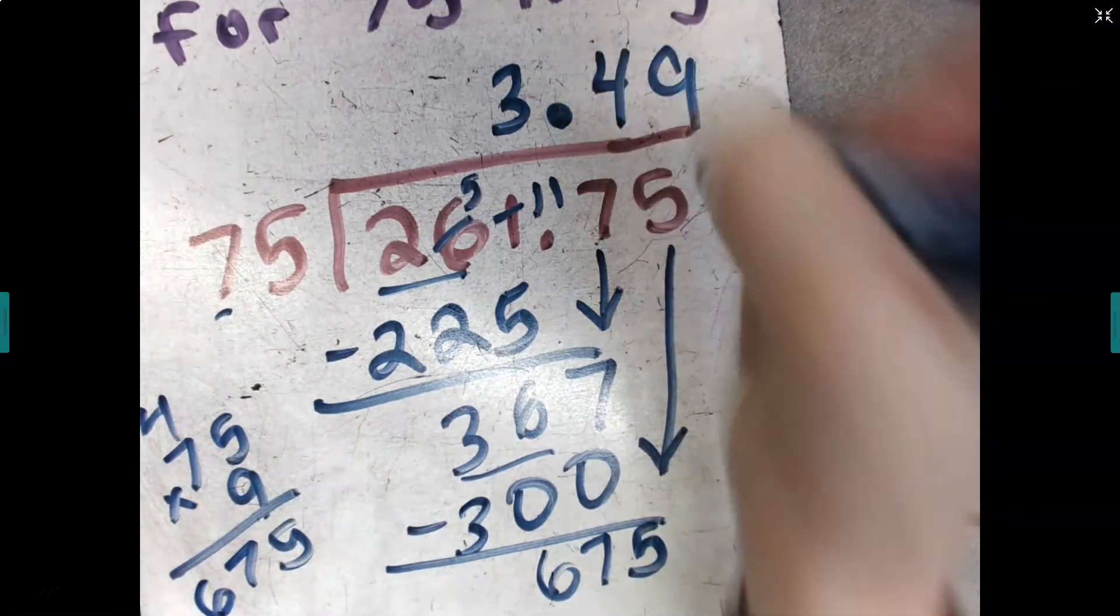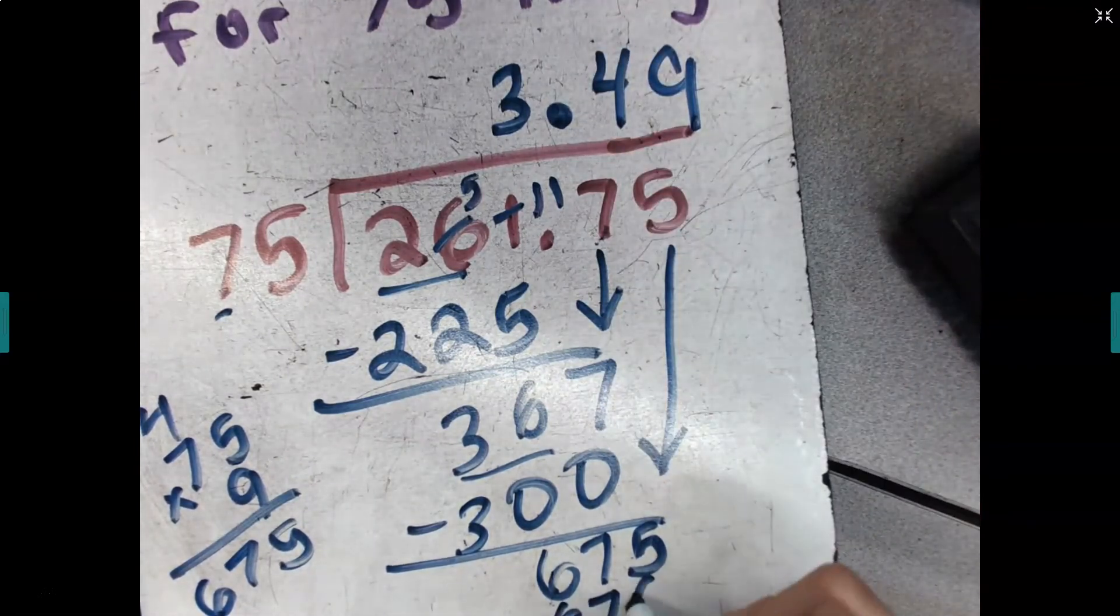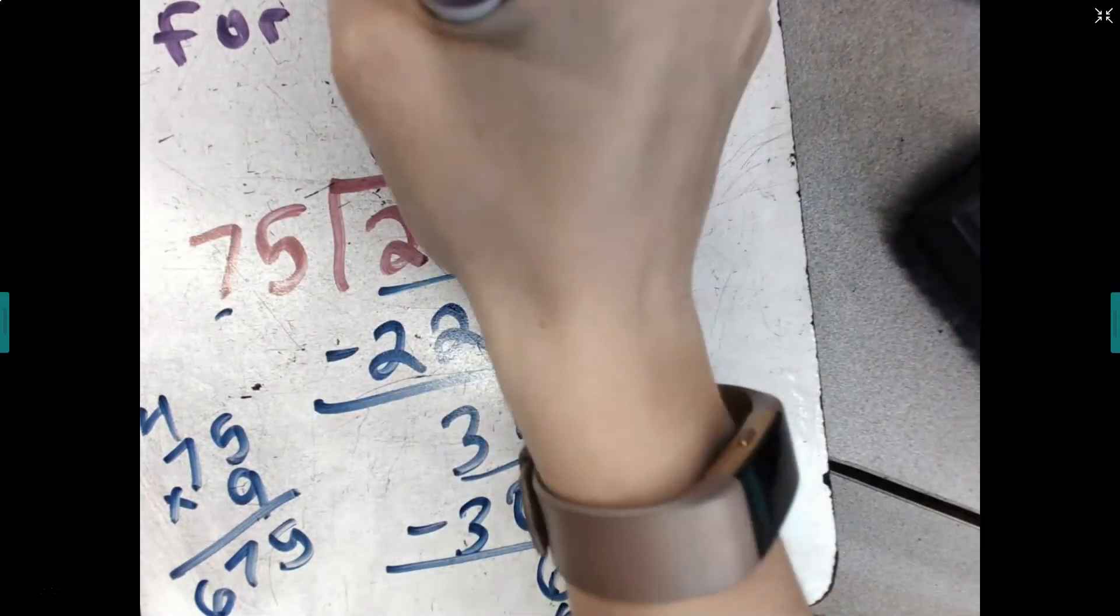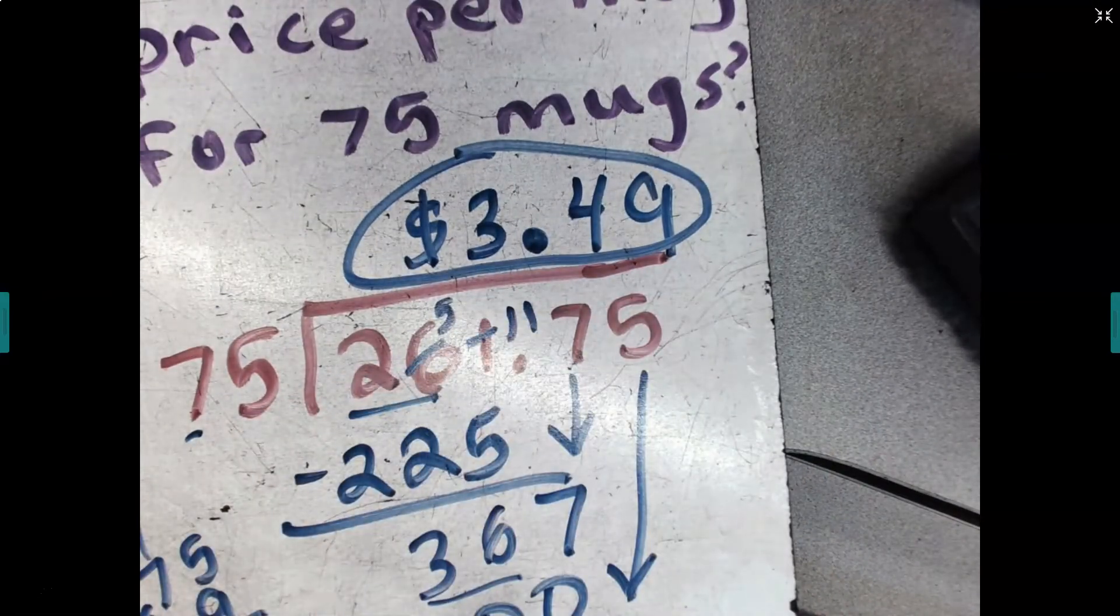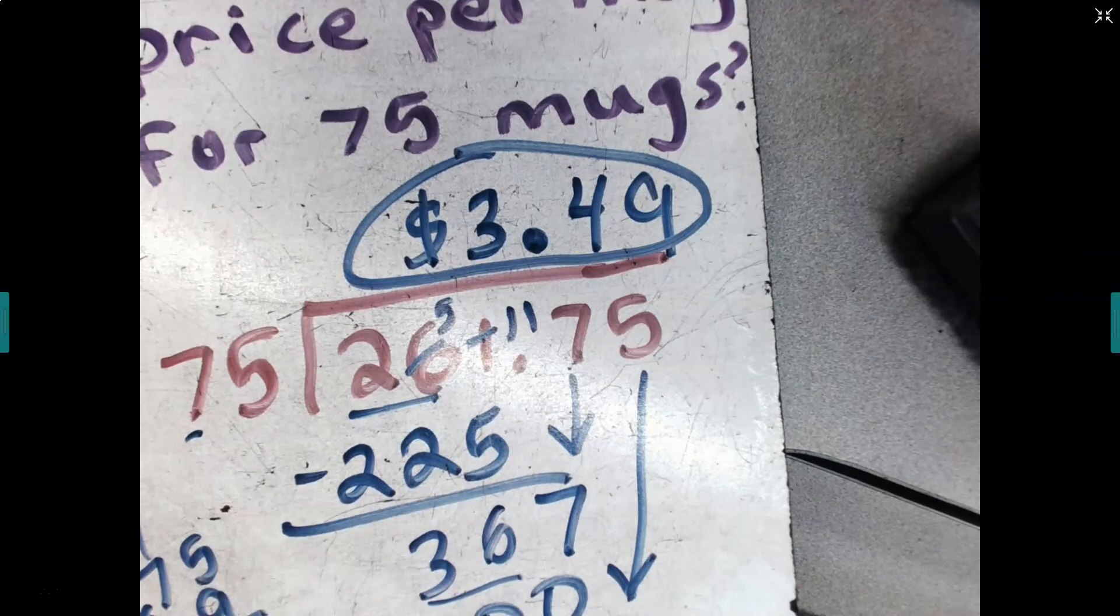And nine is exactly the number. I'm going to have zero left over. So my price per mug at 75 mugs is $3.49. I made sure to keep my decimal point exactly where it should be. I added my dollar sign, and there's my answer.